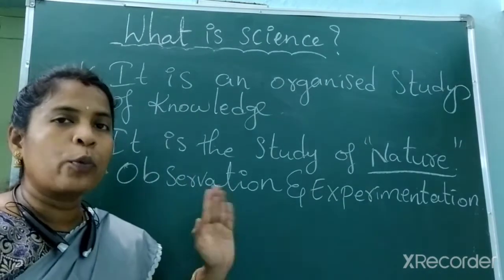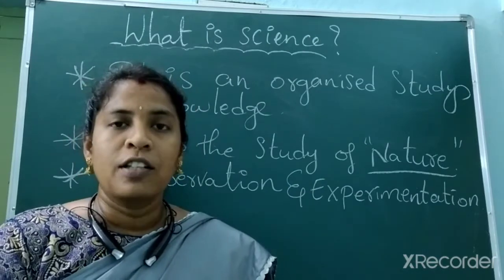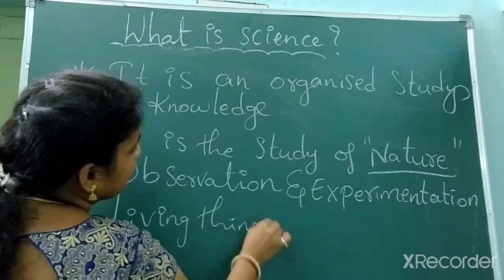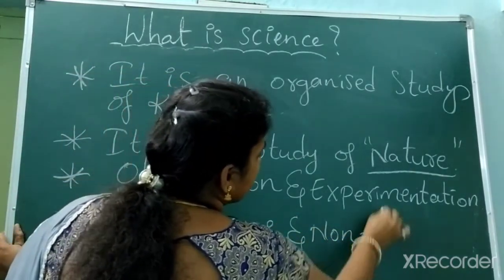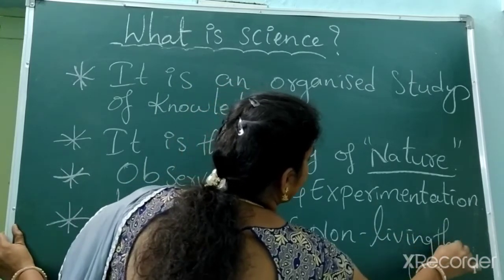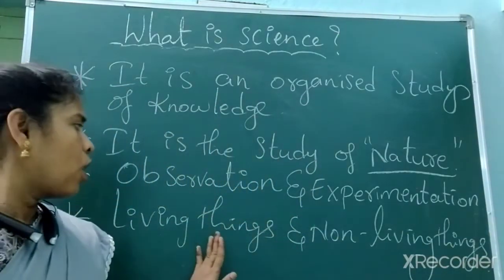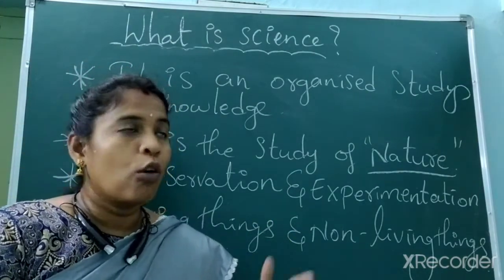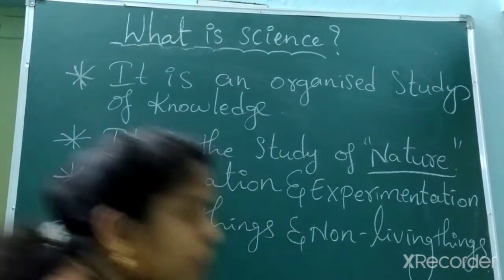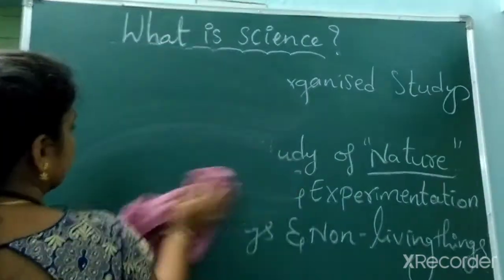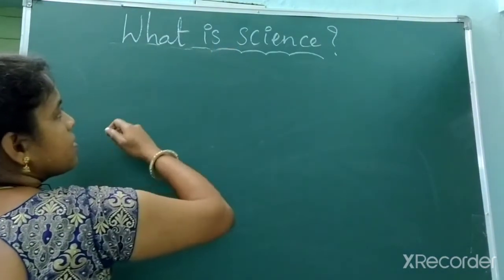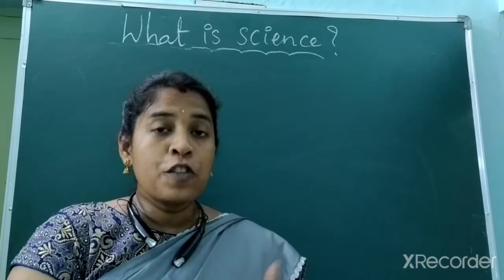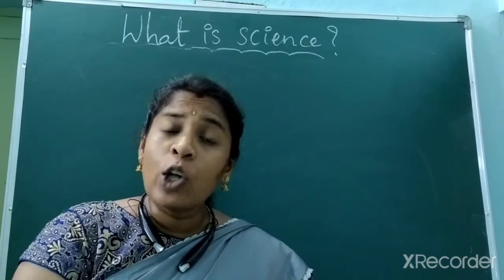What we observe and what we experiment is what is present around our conditions — nothing but living things and non-living things. So how do we learn about this living and non-living? For these, again, there are some branches. This science, based on the study of living and non-living, has been divided into two types.